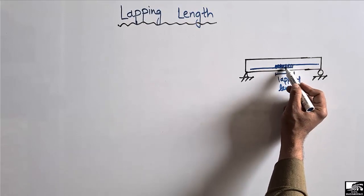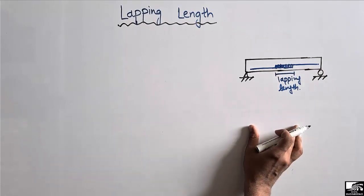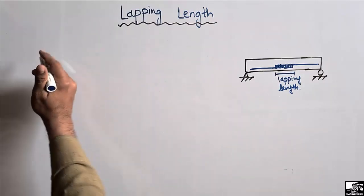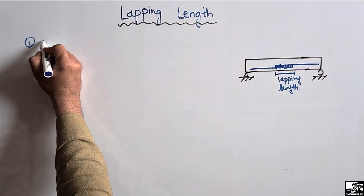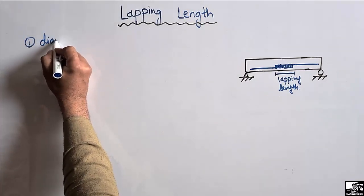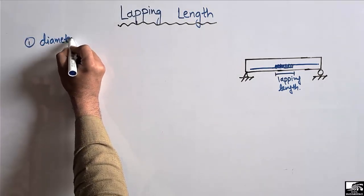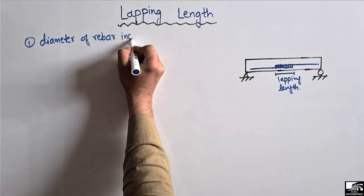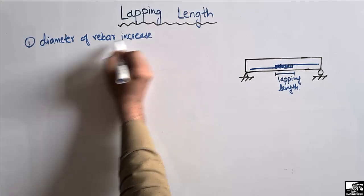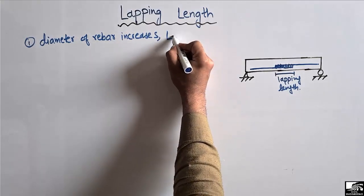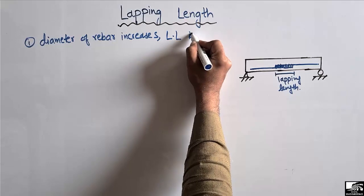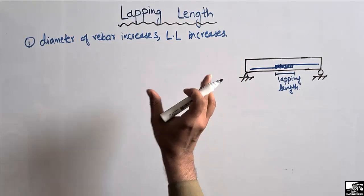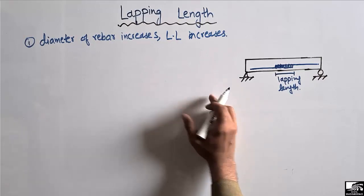There are different factors that affect this lapping length — sometimes we need to provide a higher lapping length and sometimes a lower one. The first factor that affects the lapping length is the diameter of the rebar. If the diameter of the rebar increases, the lapping length also increases.